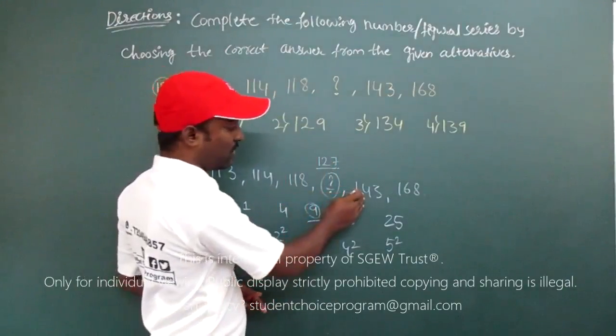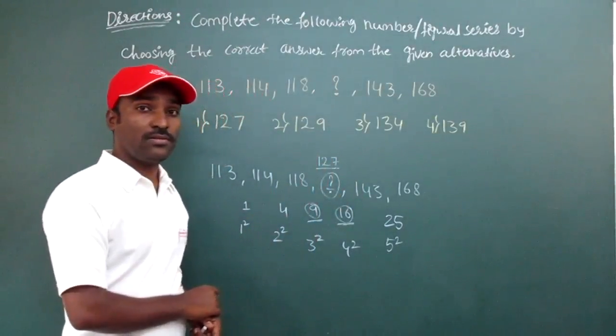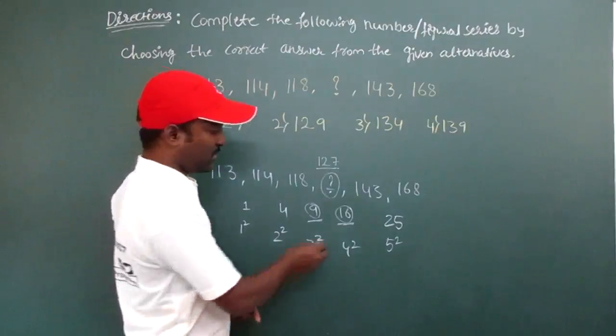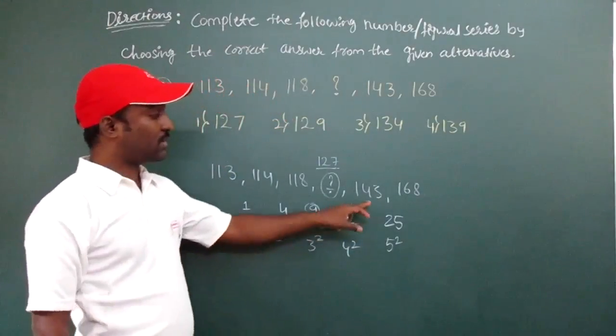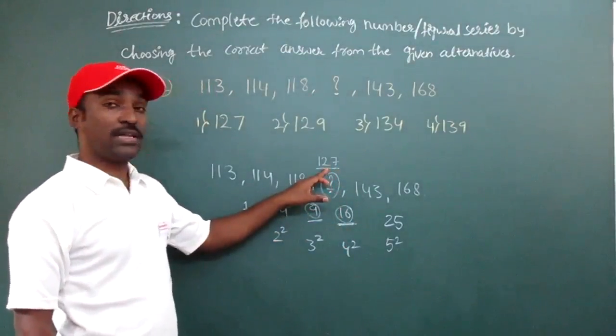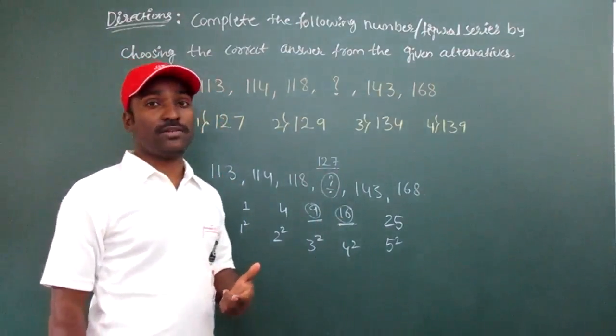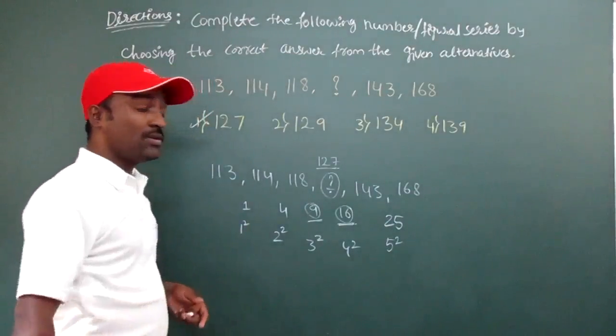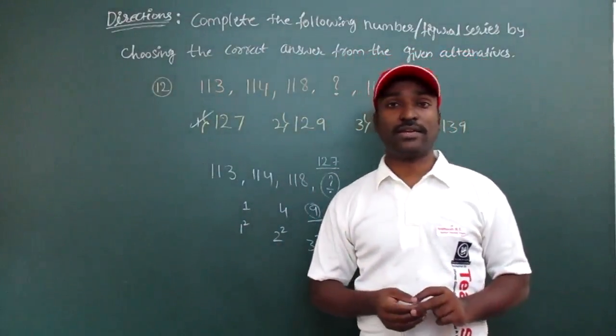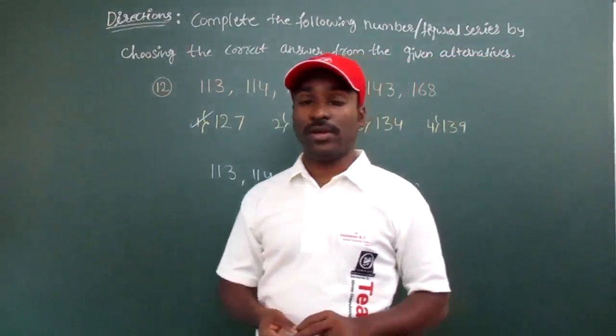Even you can go for cross-checking. If you take difference between 143 and 127, 143 minus 127 will give me 16. So that says the 127 that we obtain is the right number. Go to option, first option itself is having 127, so first option is the right option. This is how we solve this example by considering the given series and using trial and error technique and finally got the answer as 127.